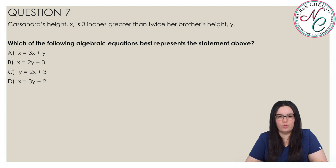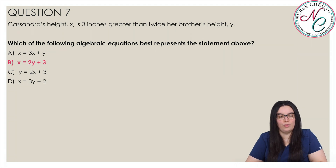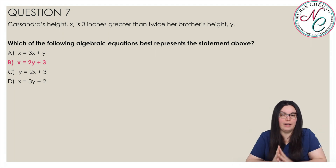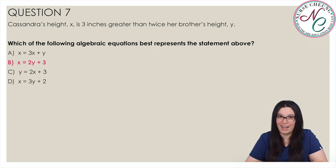Cassandra's height x is 3 inches greater than twice her brother's height y. Which of the following algebraic equations best represents the statement? Is it A, x equals 3x plus y; B, x equals 2y plus 3; C, y equals 2x plus 3; or D, x equals 3y plus 2? The correct answer is B, x equals 2y plus 3. Cassandra's height x equals 3 more than twice y, written as 2y plus 3.